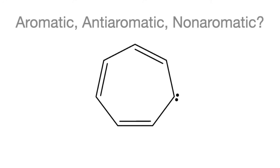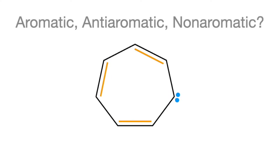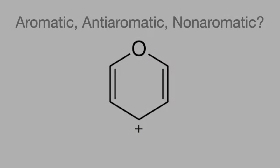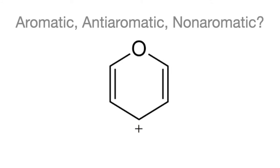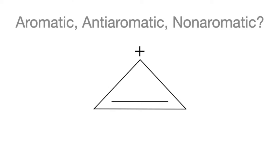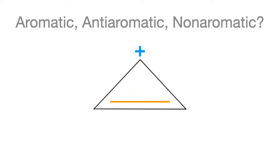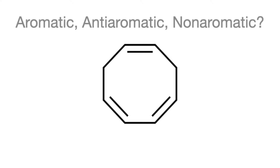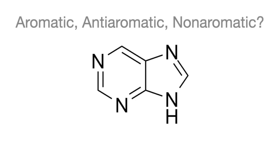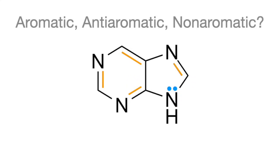Determine whether each molecule is aromatic, anti-aromatic, or non-aromatic. First molecule: it's cyclic, planar, and conjugated, but it has 8 pi electrons — making it anti-aromatic. Second molecule: it's cyclic, planar, and conjugated with that positive charge, with 6 pi electrons — making it aromatic. Third molecule: it's cyclic, planar, and conjugated with that positive charge, with 2 pi electrons — making it aromatic. Fourth molecule: it's cyclic and planar, but it's not conjugated — two single bonds in a row on each side — making it non-aromatic. Fifth molecule: it's cyclic, planar, and conjugated with that lone pair, with 10 pi electrons — making it aromatic.